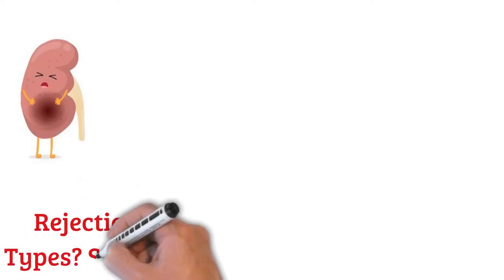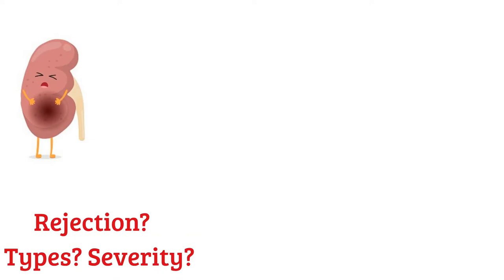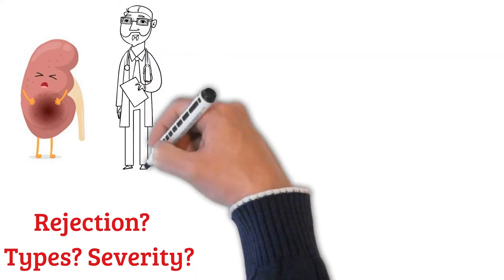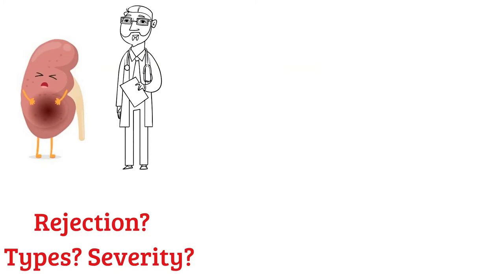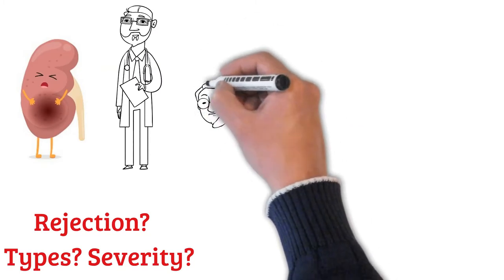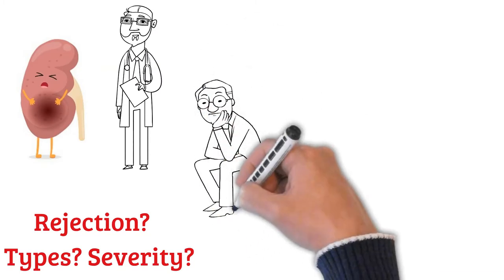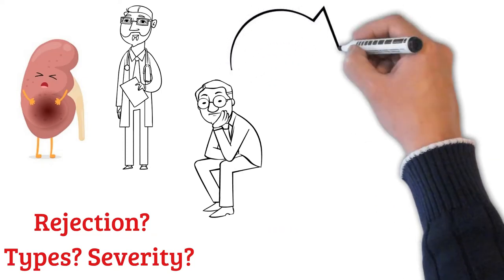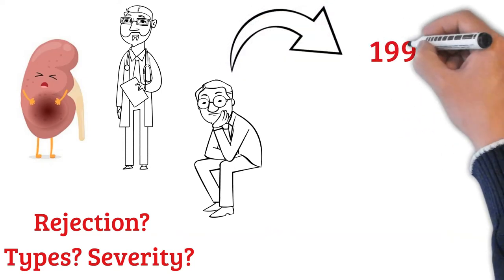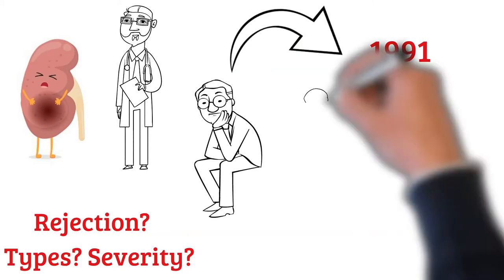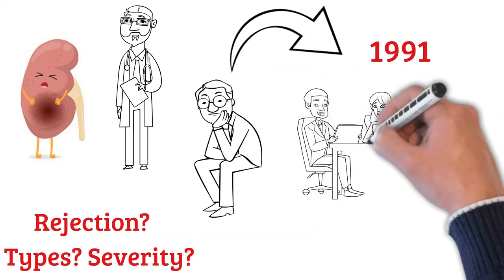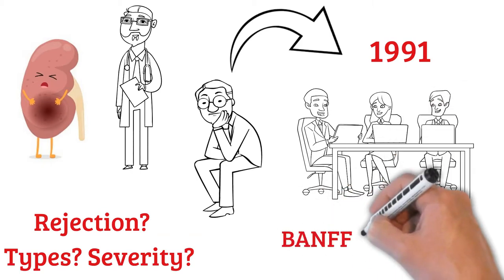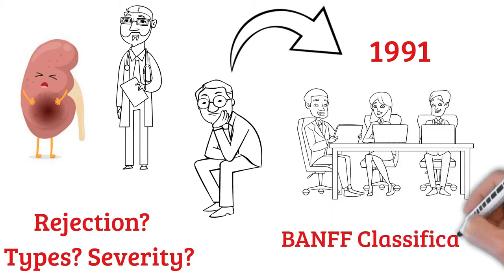Interestingly, there are many different types and presentations of kidney transplant rejection. As physicians learned more about the various forms of rejection, the need for a unified system to categorize the type of rejection and hence the appropriate mode of treatment became apparent. Thus, in 1991, medical professionals from various specialties came together in Banff, Canada, and created the Banff classification of allograft pathology.